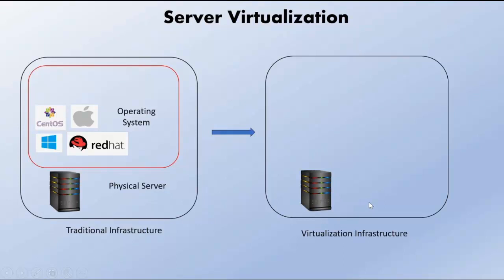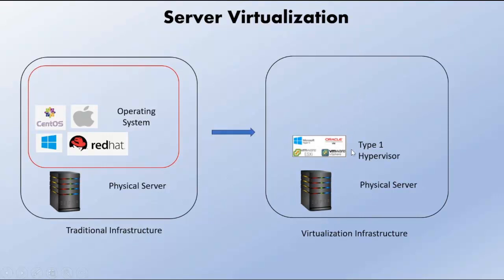To achieve this, we can install a Type 1 hypervisor. This hypervisor is provided by most companies working on virtualization technology — big names like Microsoft, Oracle, or VMware. From Microsoft we have something called Hyper-V; from VMware we have something called ESXi. This Type 1 hypervisor runs directly on the physical server, and its job is to simulate this physical server for all the operating systems running on top of it.